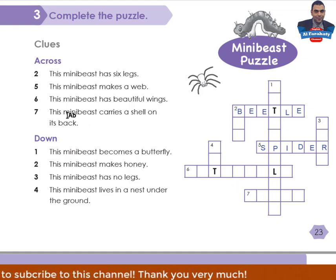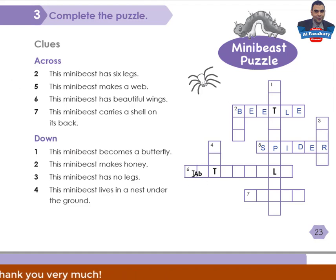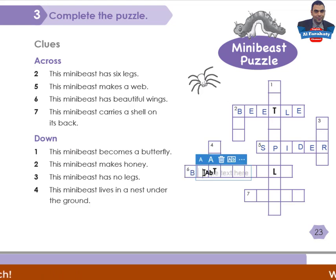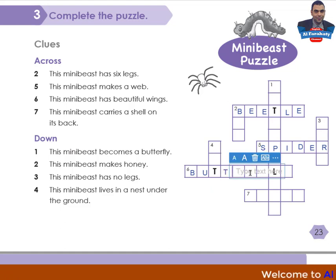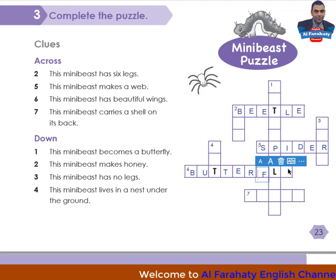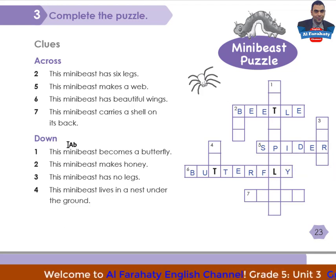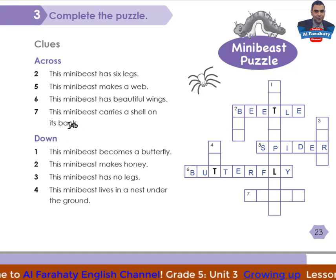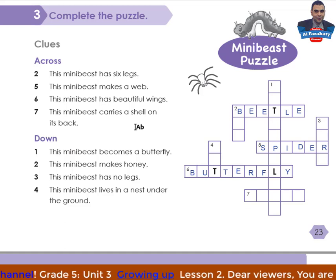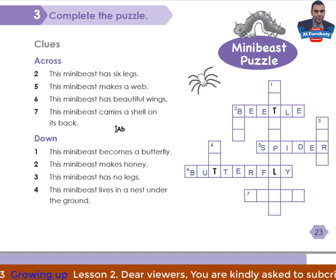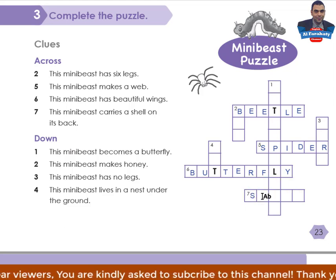Number 6: 'This mini beast has beautiful wings' — with letters T and L already given — it's butterfly. Number 7: 'This mini beast carries a shell on its back' — it's snail. Do you know the snail?